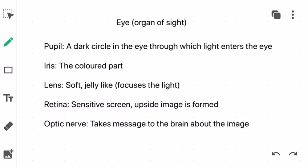The most important parts are pupil, iris, lens, retina and optic nerve. Pupil is the dark circle within the eye, in the center of the eye, which lets the light in.